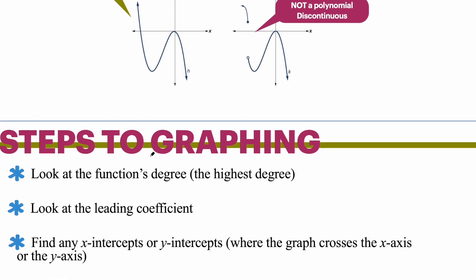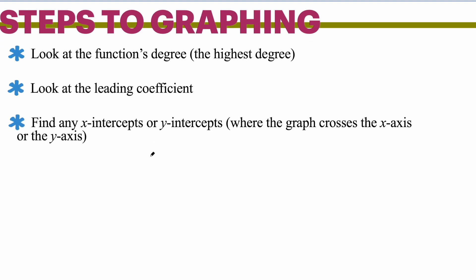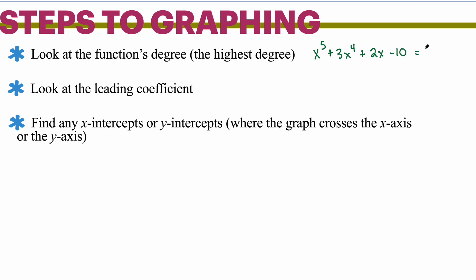Now, steps to graphing polynomial functions. First, you are going to look at the degree. For example, x to the 5th plus 3x to the 4th plus 2x minus 10 — the degree of this function would be 5. The highest degree is considered the highest exponent. When you say degree, you are basically looking for the exponent.